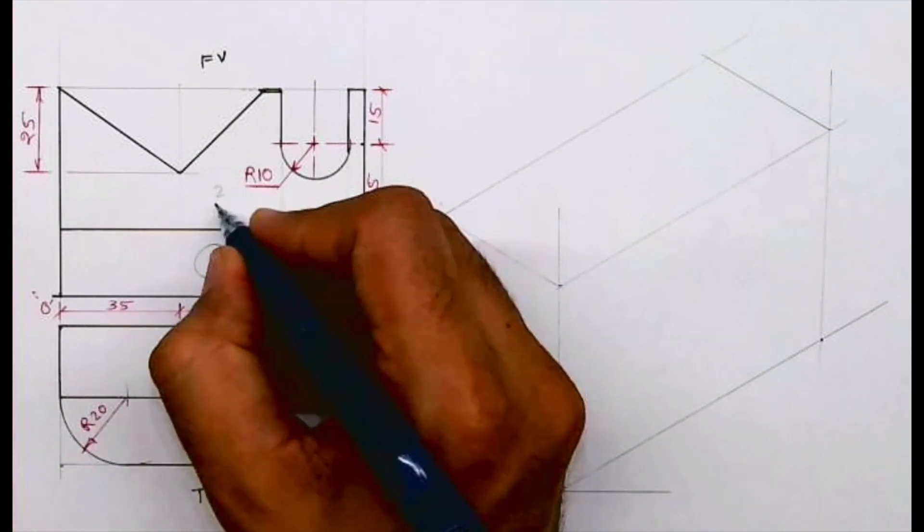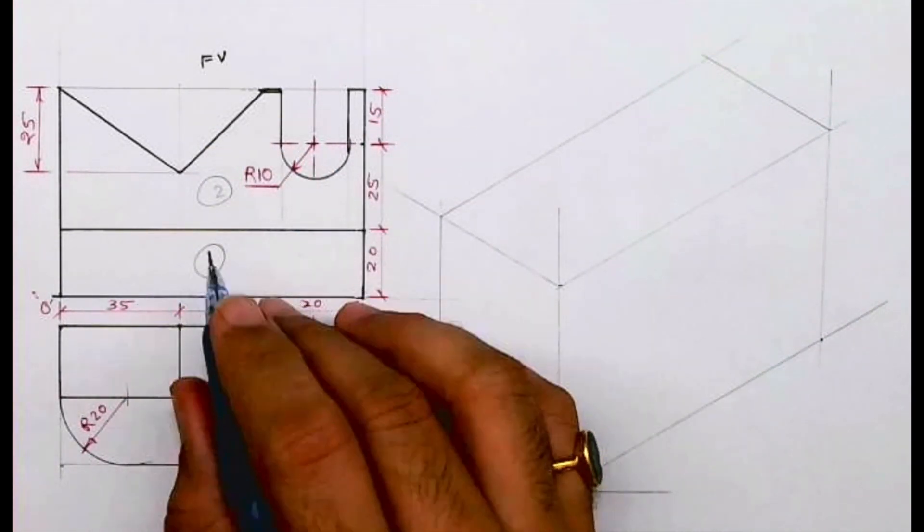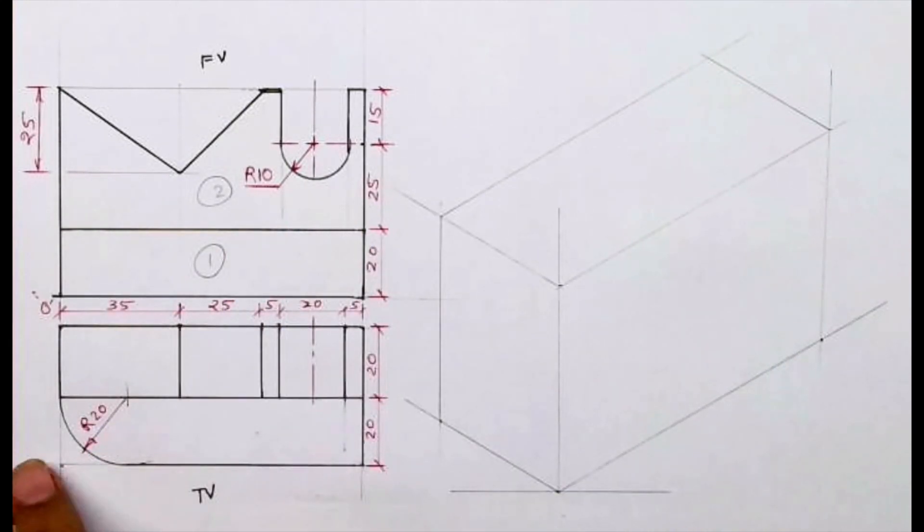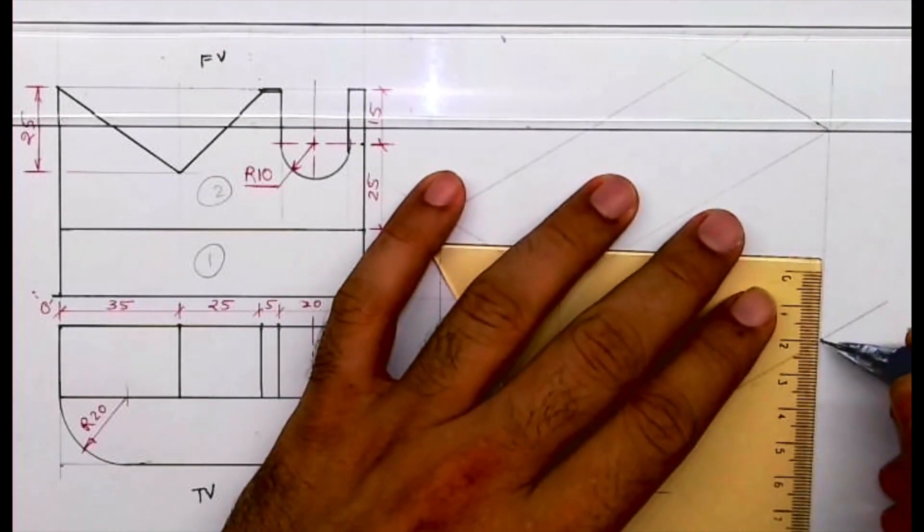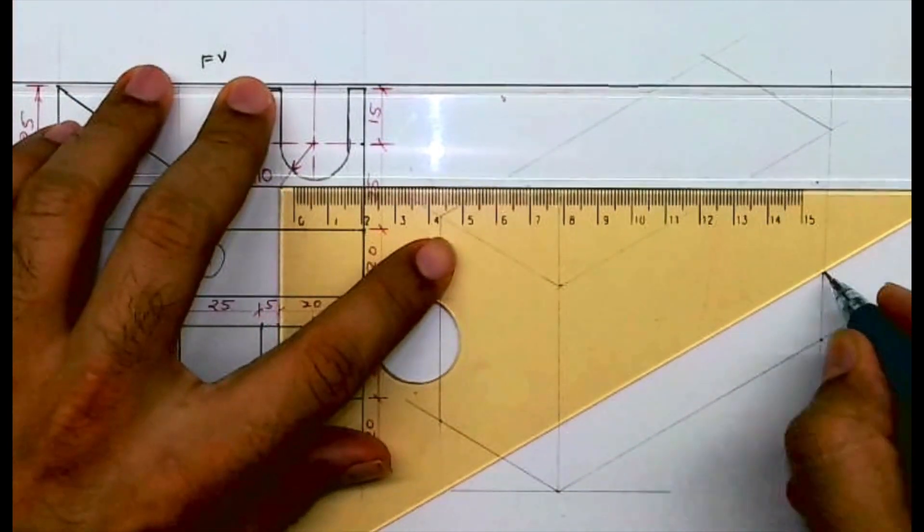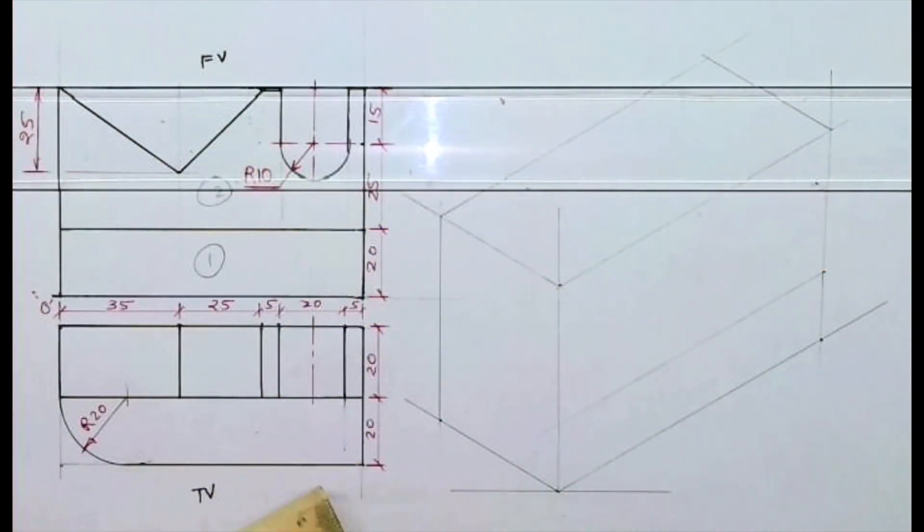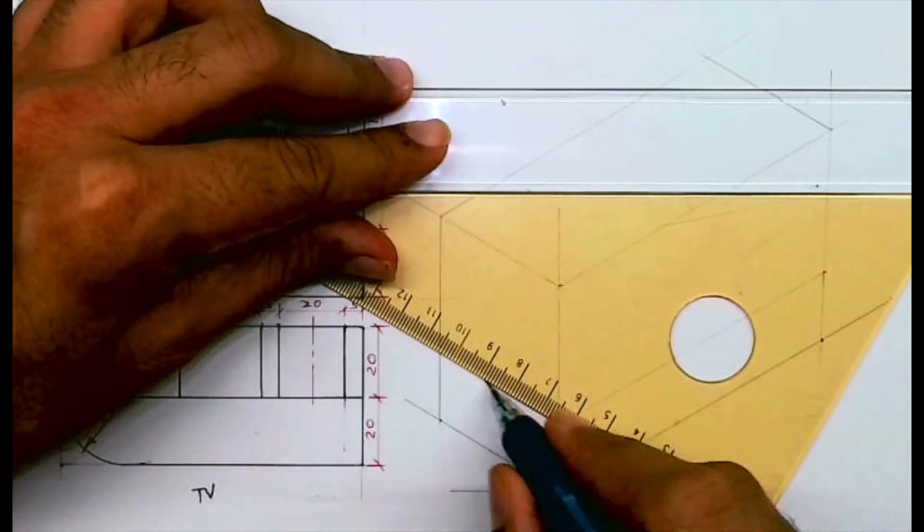If you see in front view there are two parts, in top view there are more than two parts, so we'll start with front view. In that also part 1 is nearer to us, see this it is down. So we'll start with part 1 and I've given 20 so I will take 20, I'll draw line and from here also I will draw line.